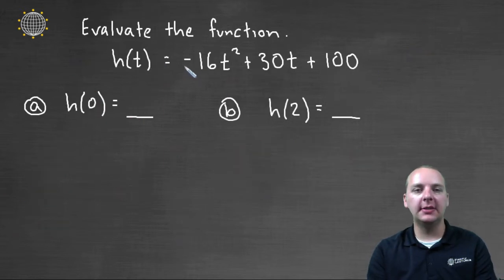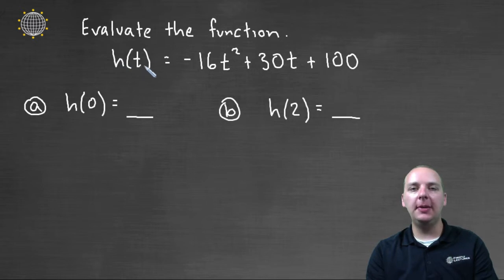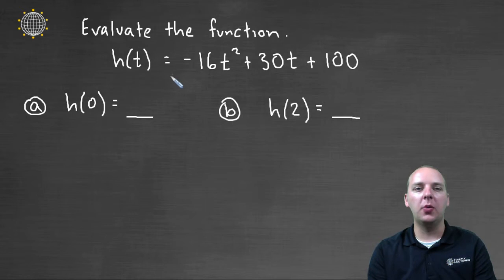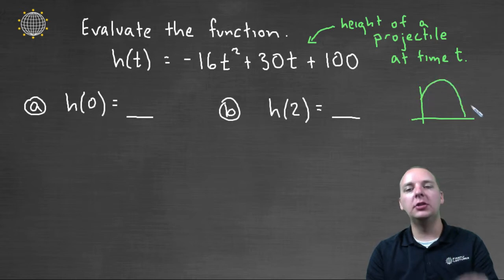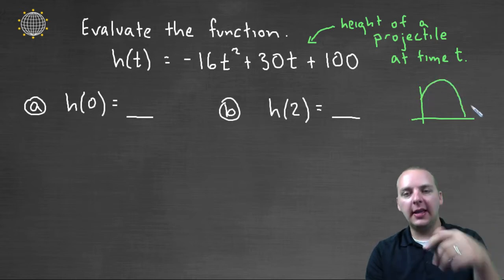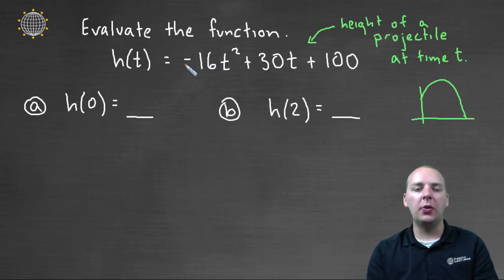Alright let's end with one last example. H of t equals negative sixteen t squared plus thirty t plus one hundred. You'll see a lot of examples with h's and t's, especially when you're talking about quadratic functions. Because what this is modeling is the height of a projectile at a certain time. You see if you were to graph this parabola here, it would look something like this. It would look like something we shot up in the air, and then came down and hit the ground. So you'll see a lot of quadratic functions represented by h of t.